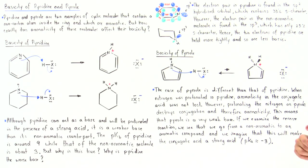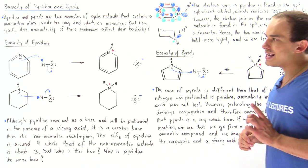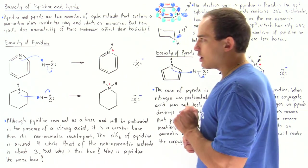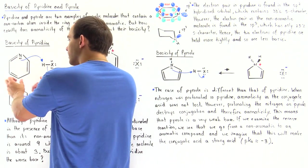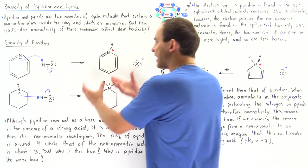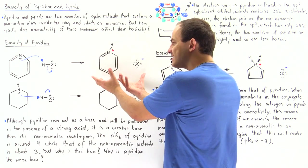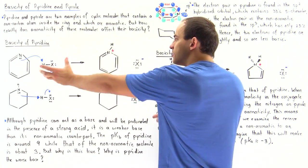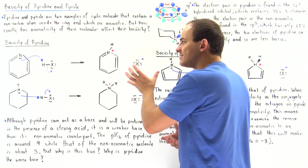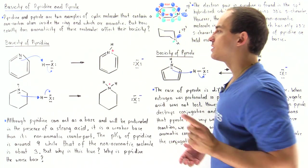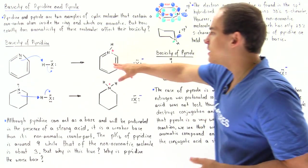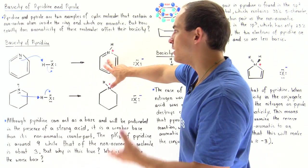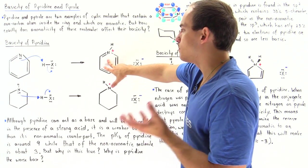That's exactly why pyridine is slightly less basic than its non-aromatic counterpart. Notice one interesting thing: when we go from pyridine to its conjugate acid, the aromaticity of the molecule is not lost — the conjugate acid is still aromatic.